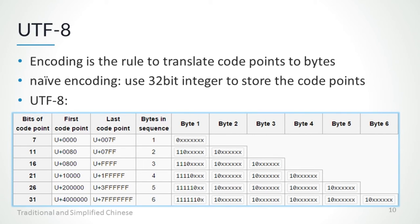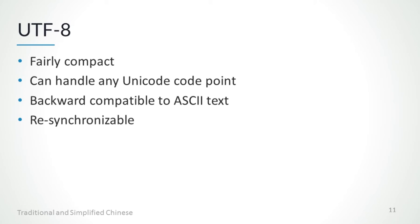In UTF-8, if the code point is less than 128, it represents a single byte. If the code point is between 128 and 2047, it's turned into two byte values. And for code points with larger values, it is turned into longer byte sequences. UTF-8 has several favorable characteristics: it can handle any Unicode code point, yet it is fairly compact. It's backward compatible to ASCII text. Moreover, if some bytes are corrupted or lost, it is possible to determine the start of the next code point and resynchronize the text.